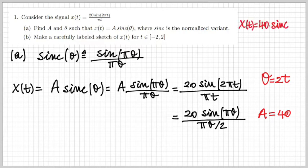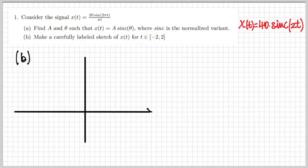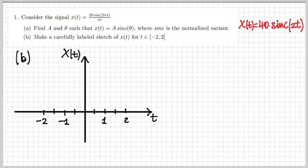Take note of that because it can be useful when solving part B of the exercise. Part B asks us to make a carefully labeled sketch of the signal x of t between minus 2 and 2. We need to evaluate the values of x of t at certain points to understand the trend.